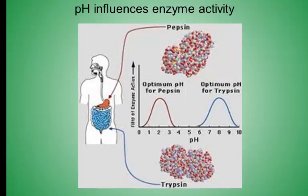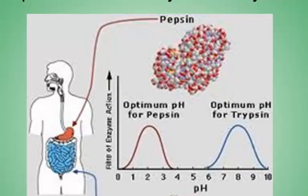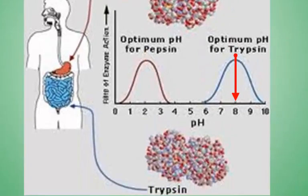pH also influences enzyme activity. Enzymes will take on different shapes and have different intermolecular attractions with different pHs. There is not one overall pH for optimal enzyme activity. Optimal activity for pepsin occurs at pH 2, which is much lower than the pH for optimal activity for trypsin, which is at pH 8.